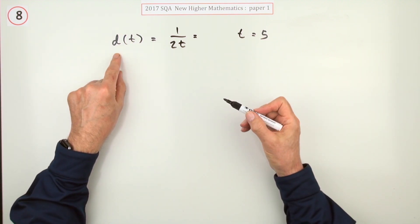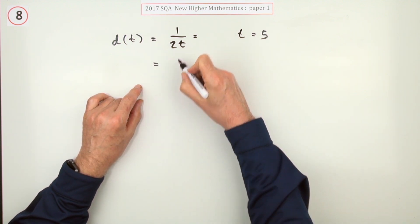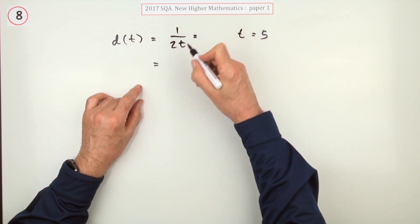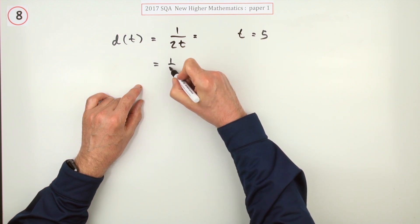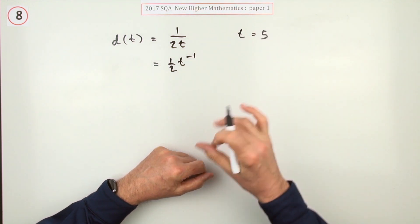Well, the rate of change means differentiate it, but that's not quite suitable to differentiate. I want to bring the t up, but don't bring the 2 up with it. The 2 would stay underneath as a half. It's the t that goes up to the power negative 1.